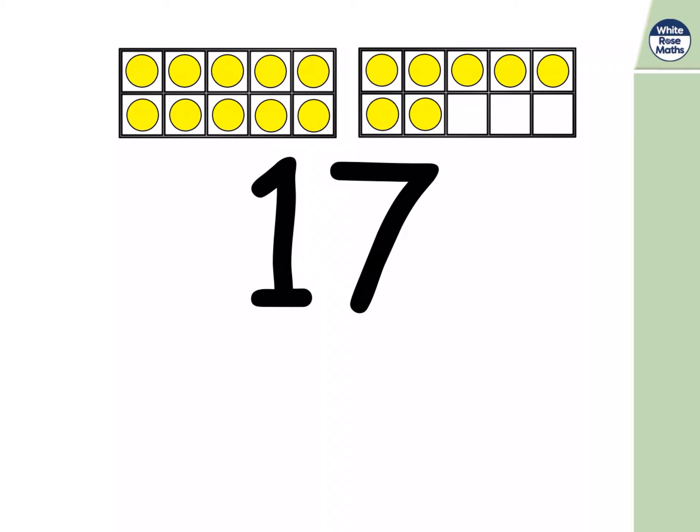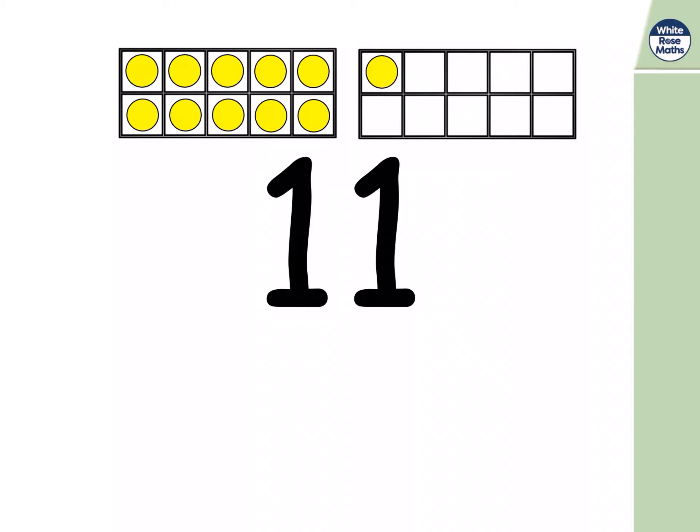This time we're doing bonds to twenty. We've just done seven and three. And this one is seventeen and three. That's right, three more to get up to the next ten. Eleven. Now I remember one and nine, so it must be eleven and nine. Yes. We can use what we know.